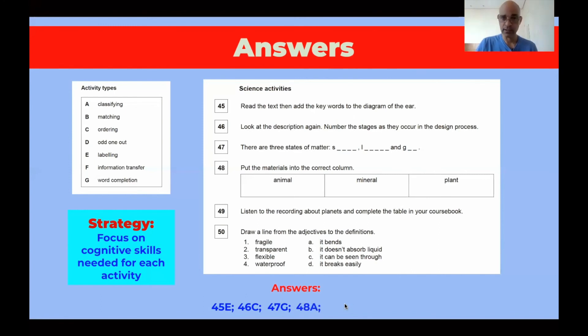Number 49, listen to the recording about planets and complete the table in your course book. Again, audio to text, to writing. So students are transferring information from one medium to the other. Number 49, sorry, that's information transfer.